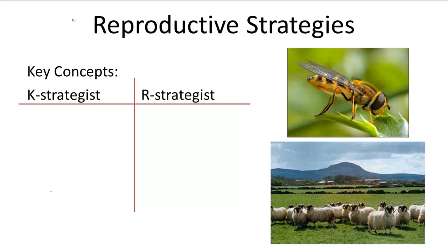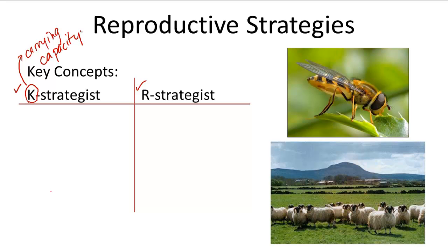Reproductively, organisms can be categorized into two groups: K-strategists and R-strategists. K-strategists maximize their populations near carrying capacity — this is easy to remember because K stands for carrying capacity. R-strategists maximize their population rate of growth, so R stands for rate of growth. An example of a K-strategist would be the mammal, and an example of an R-strategist would be the insect.